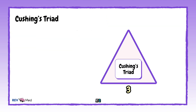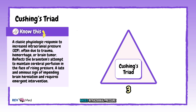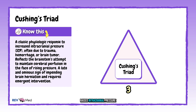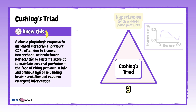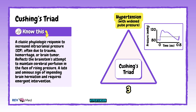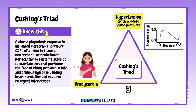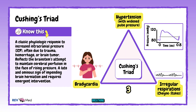Number three: Cushing's triad. The signs of raised intracranial pressure are hypertension, bradycardia, and irregular breathing — a dangerous sign of brain herniation.